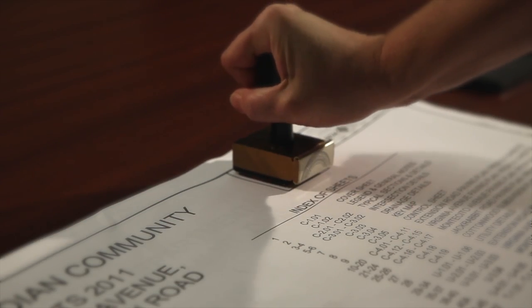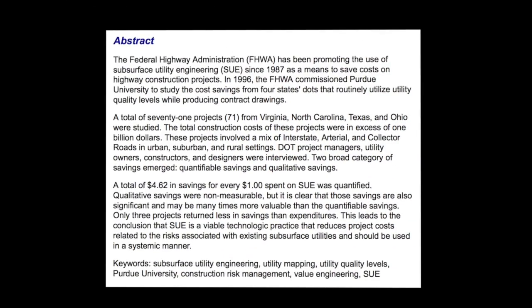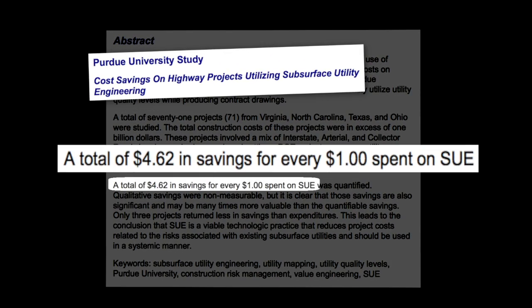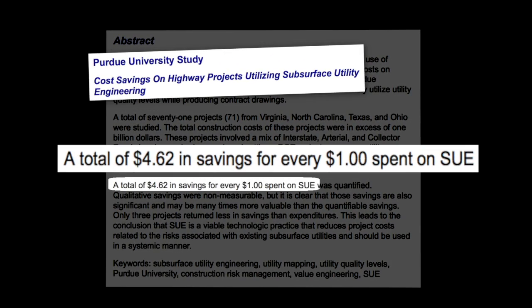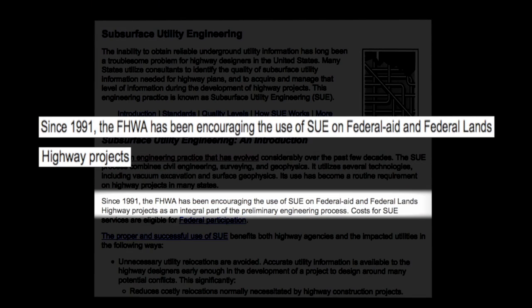Subsurface utility engineering is a proven process. Slight adjustments in design can produce significant cost savings by reducing or eliminating utility relocations. The FHWA has been encouraging the use of SUE on all federal aid and federal lands highway projects.